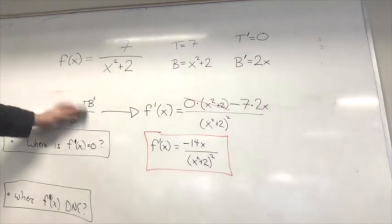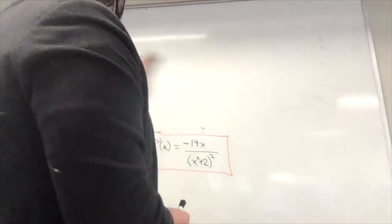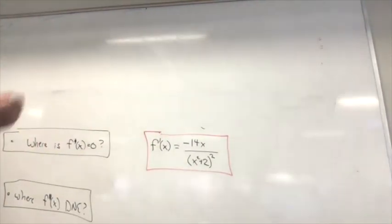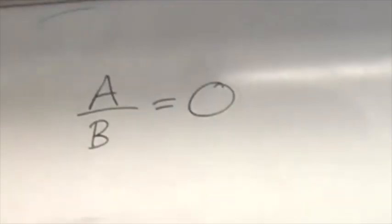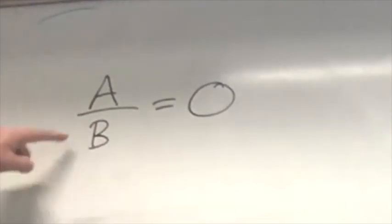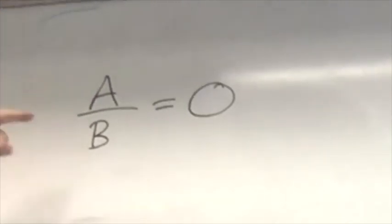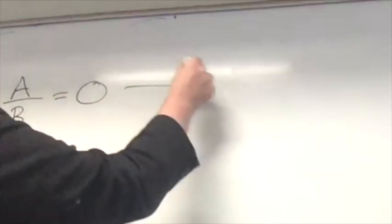So where is f prime of x equals 0? Well, we need to think about when can a fraction be equal to 0. If I just have a fraction or ratio of two things, if I have A over B equal to 0, and I told you this is equal to 0, what would you know? A has to be 0, right? I'm dividing A things into B pieces and I got 0. If I divide one thing into 10 pieces and I say your portion is 0, you're going to say I got ripped off. So this can only happen if A is equal to 0.